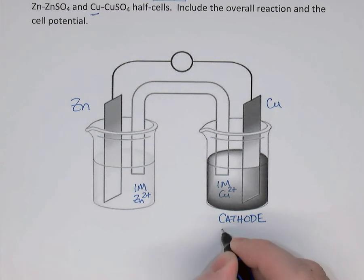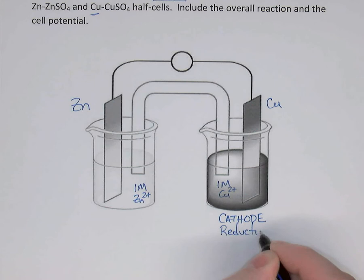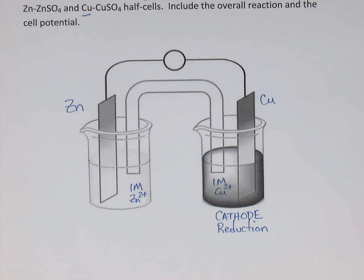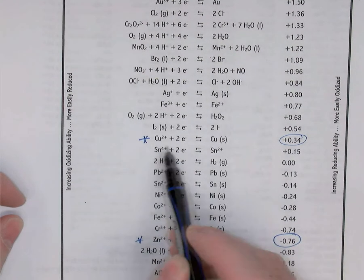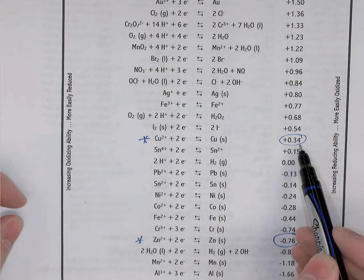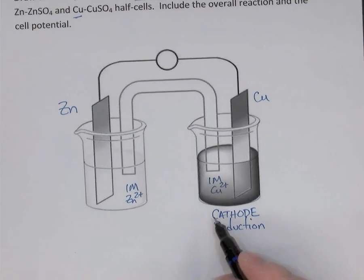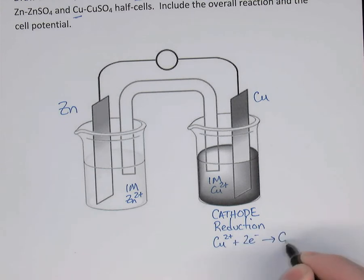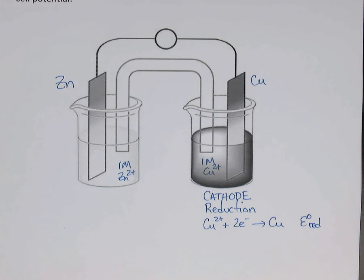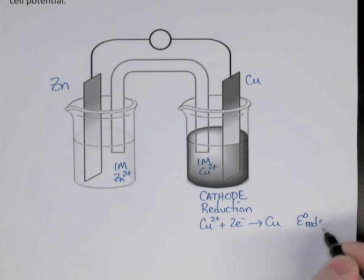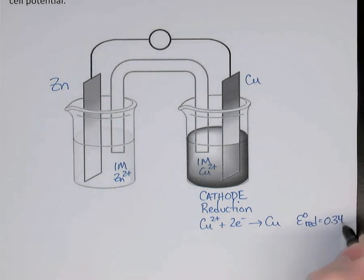Since the copper electrode is the cathode, this is where reduction will happen. Because I was using a reduction table, I can copy this equation directly from the chart with its reduction potential beside it. In this half cell, Cu²⁺ ions are going to gain 2 electrons to make copper metal. The standard reduction potential — E° — was positive 0.34 volts.